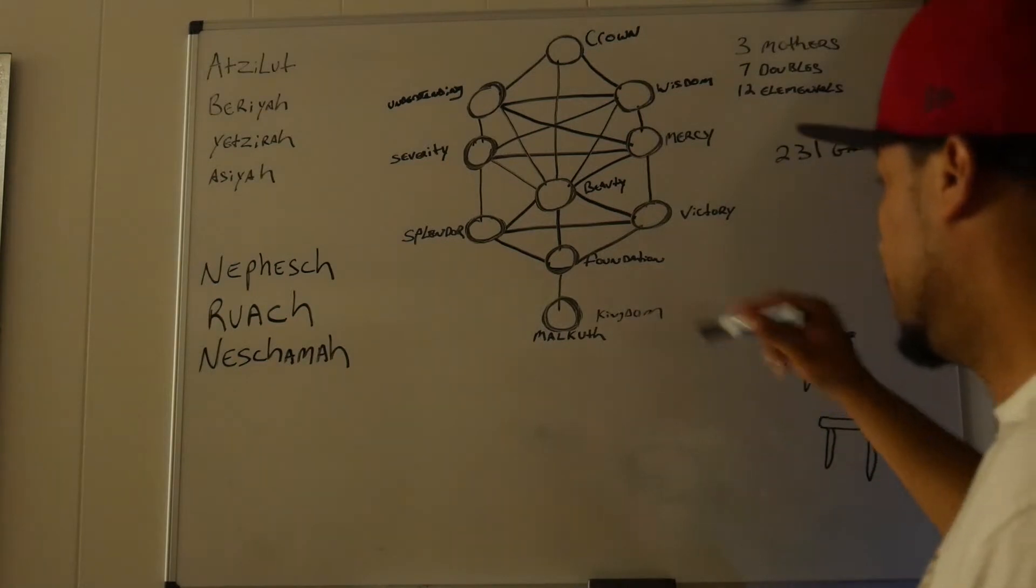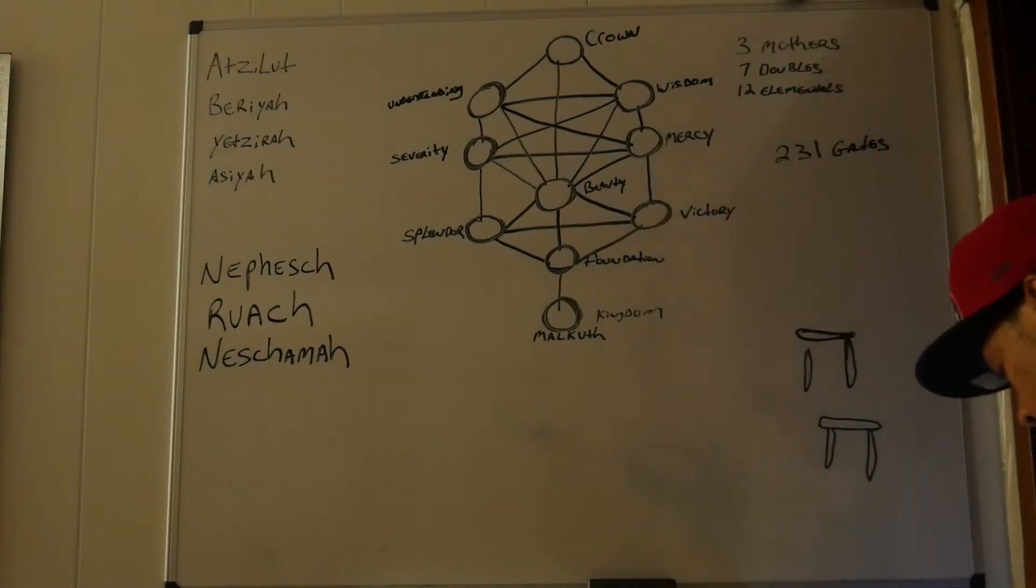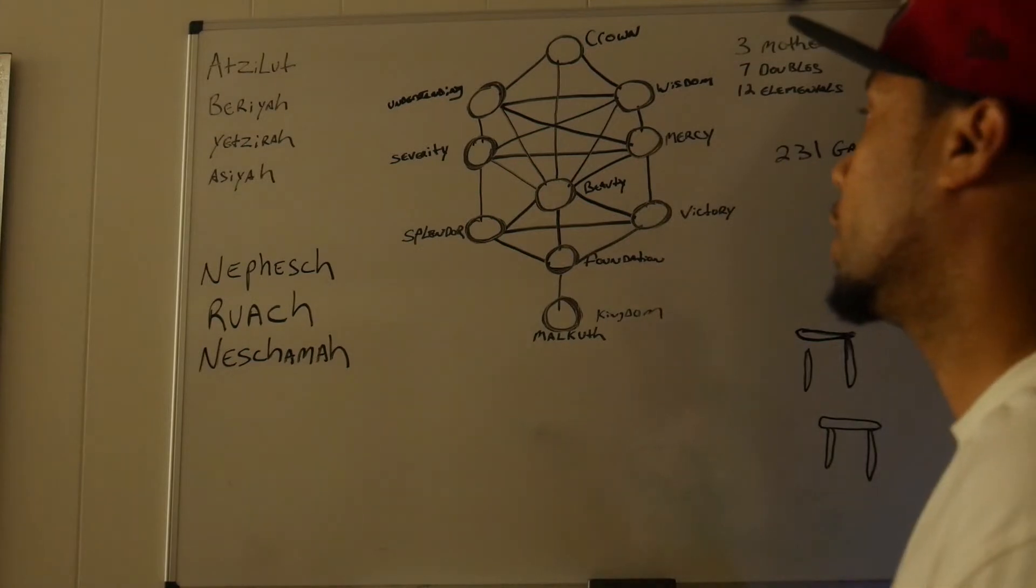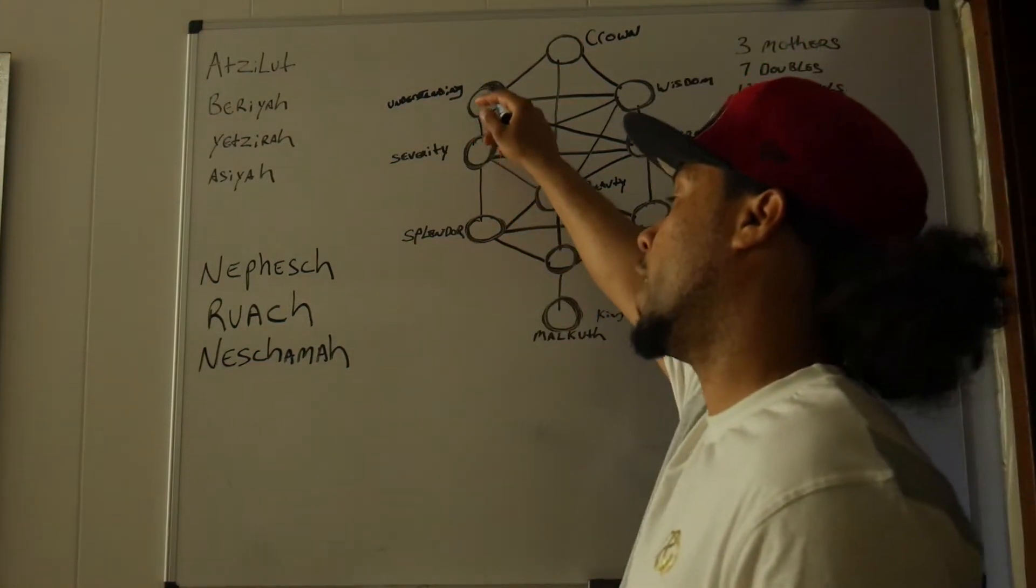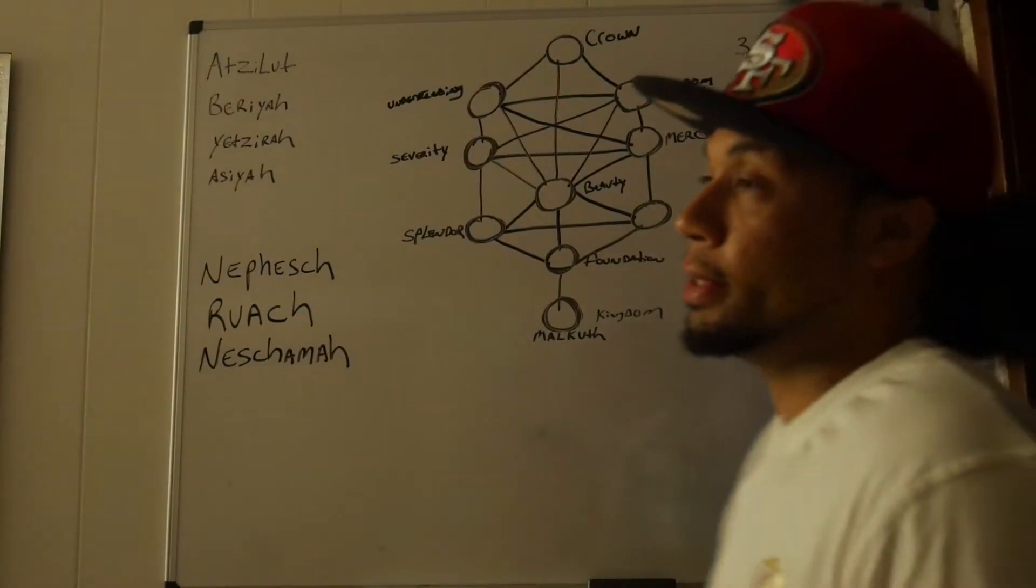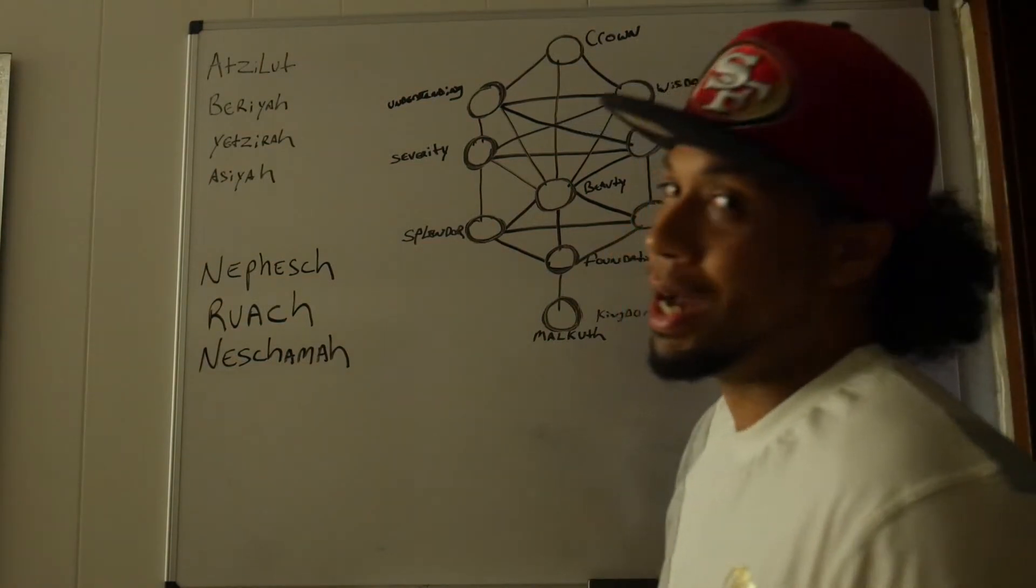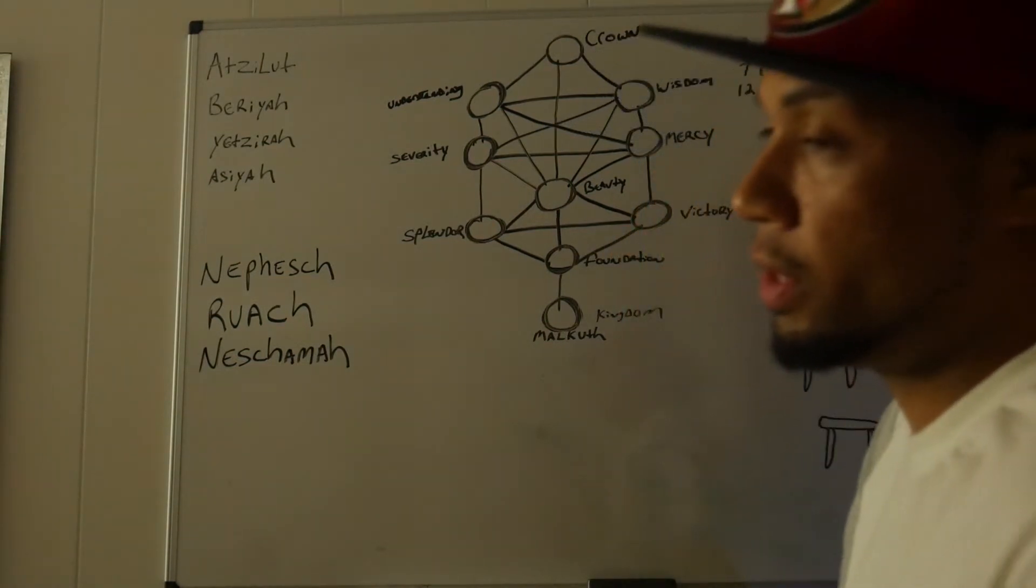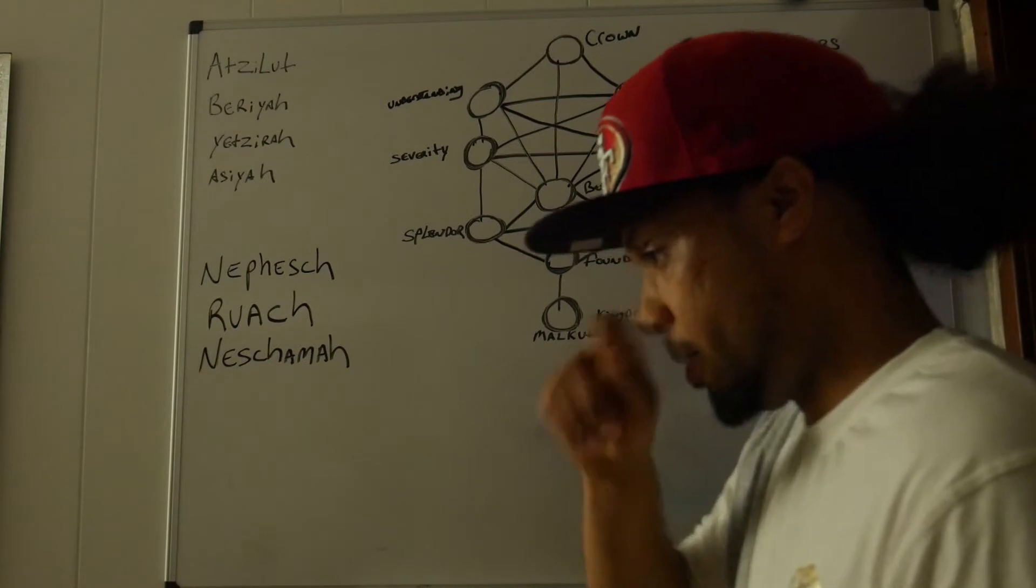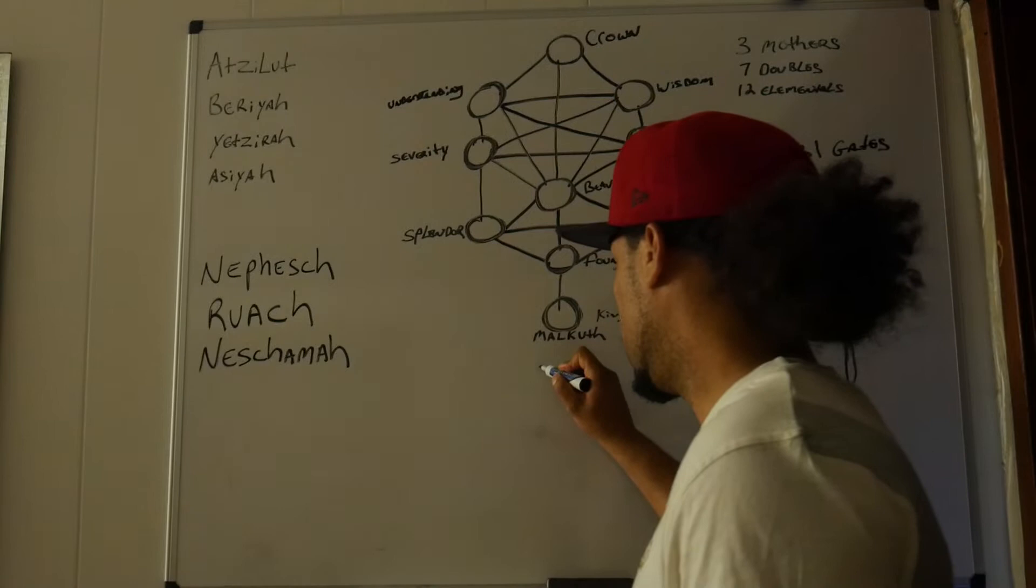Which is Yod-Hei-Vav-Hei Elohim. And Elohim is basically God, male and female. It's a plural name. The Yod and Mem at the end of Elohim, which is the Yod, something like this, something like a comma, and the Mem is something kind of like this.